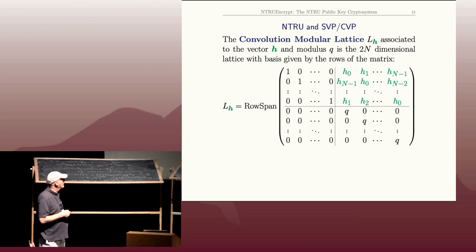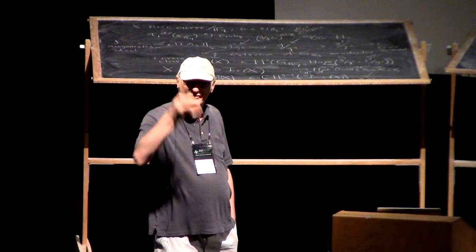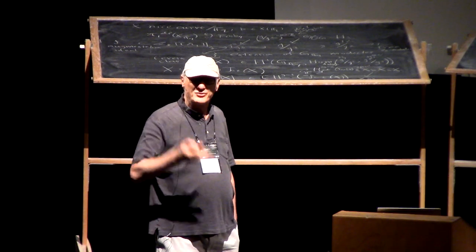So, easy enough. And what I'm going to do is look at the lattice that's spanned by the rows of this matrix. I actually prefer to write lattices using column vectors, but Jeff really likes row vectors.